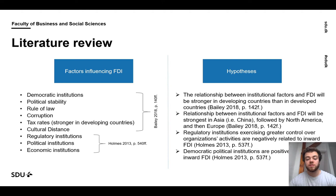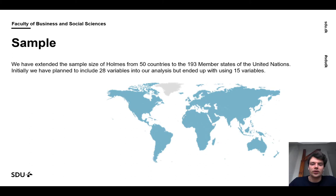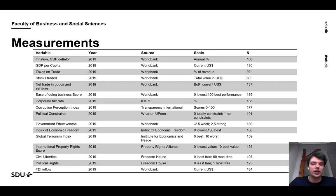Holmes and Bayley built several hypotheses. The relationship between institutional factors and FDI will be stronger in developing countries than in developed countries. The relationship between institutional factors and FDI will be the strongest in Asia, followed by North America and then Europe. Regulatory institutions exercising greater control over organization activities are negatively related to inward FDI. And democratic political institutions are positively related to inward FDI. Regarding the sample, we've extended the sample size of Holmes from 50 countries to the 193 member states of the United Nations. Initially, we planned to include 28 variables into our analysis, but ended up with only using 15 of them. Coming to the measurements, similar to Holmes, we've included economic,